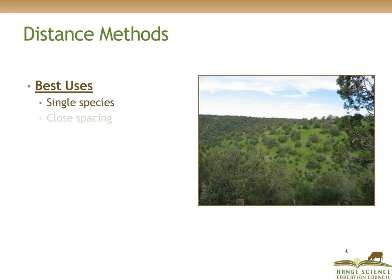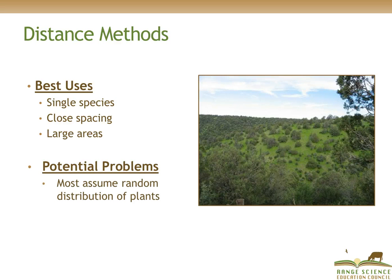Distance methods are most often used in situations where we are interested in focusing on a single species, often when they are closely spaced together and when we are working in relatively large areas. A potential problem with distance methods is that most of these methods assume a random distribution of plants, and in general, plants are not randomly distributed in the landscape.